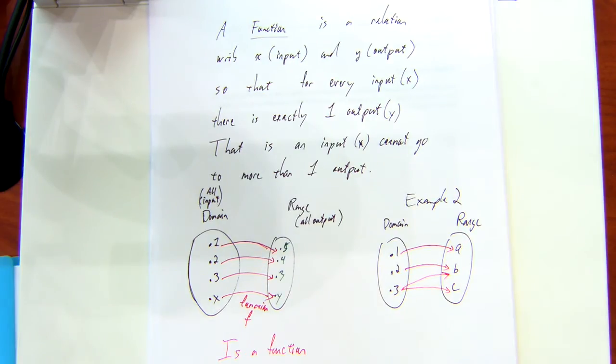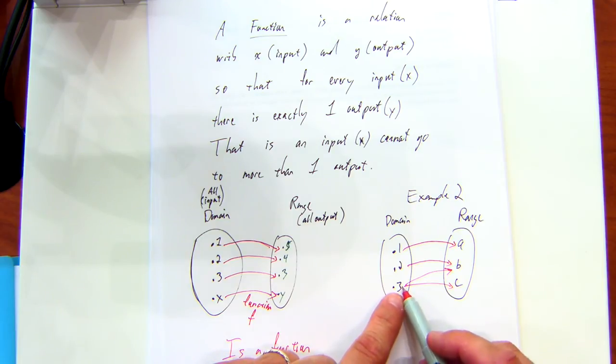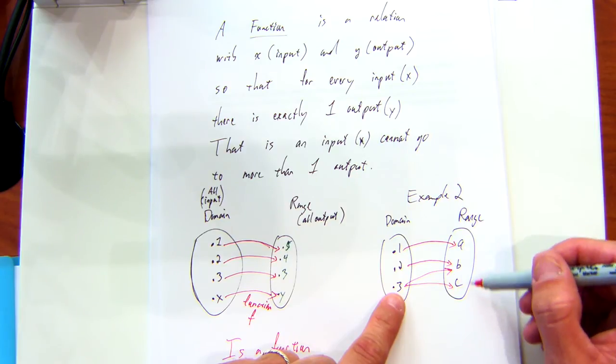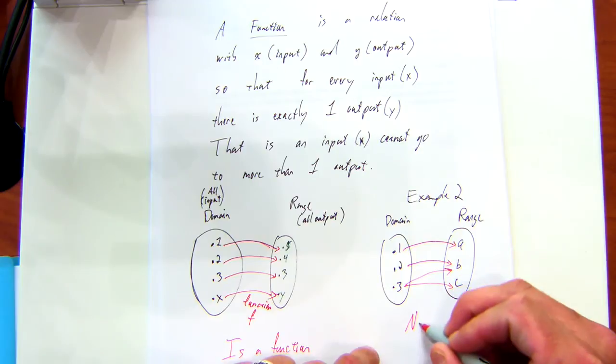Is this a function? No. Why? Because the three, if I use three as my input here, then three gets mapped to or sent to what? B and C. That violates the definition. This is not a function.